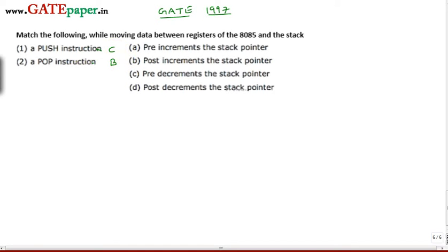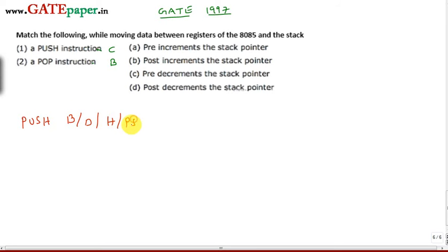The push instruction pre-decrements the stack pointer, whereas the pop instruction post-increments the stack pointer. The push instruction can be: push B, push D, push H, or push PSW — these are the four different ways of the push instruction. Push B means you are pushing the contents of the BC register pair onto the stack.